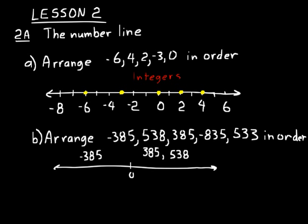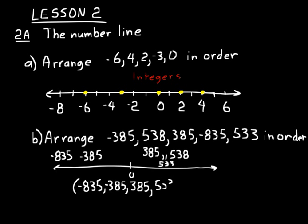Then we have 538 — pretty far to the right. A 385 would be less than 538, so it's to the left. Negative 835 is going to be less than negative 385 — it would be to the left because it's more negative. Then 533 goes in between 385 and 538. So writing those as a group in order: negative 835, negative 385, positive 385, 533, and 538.